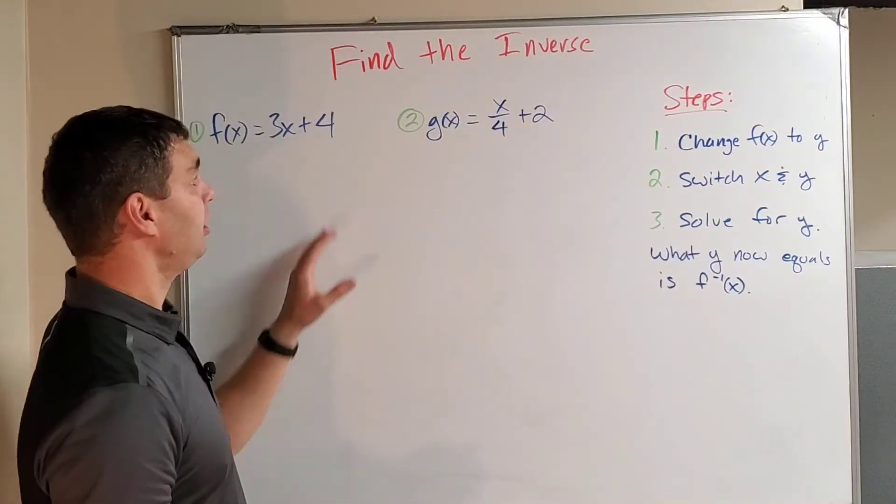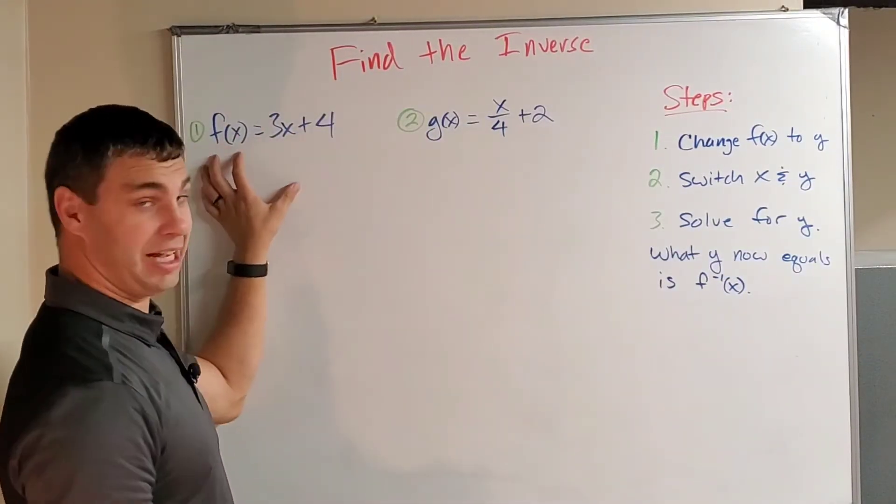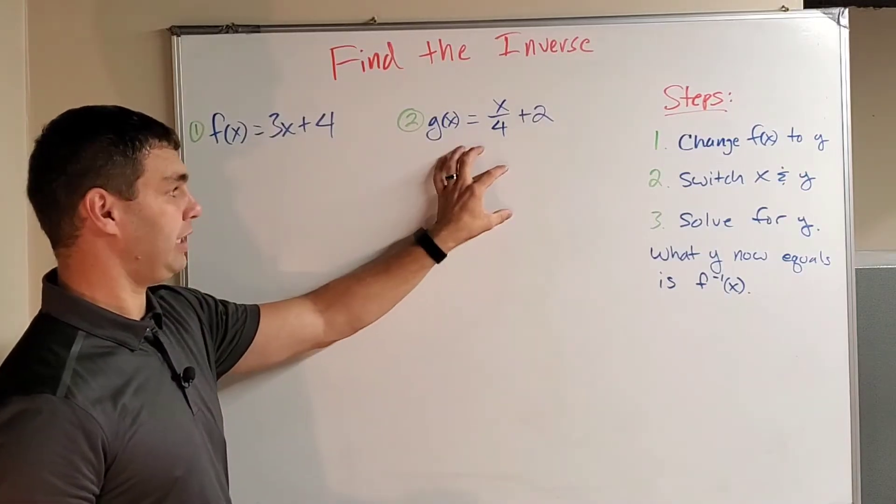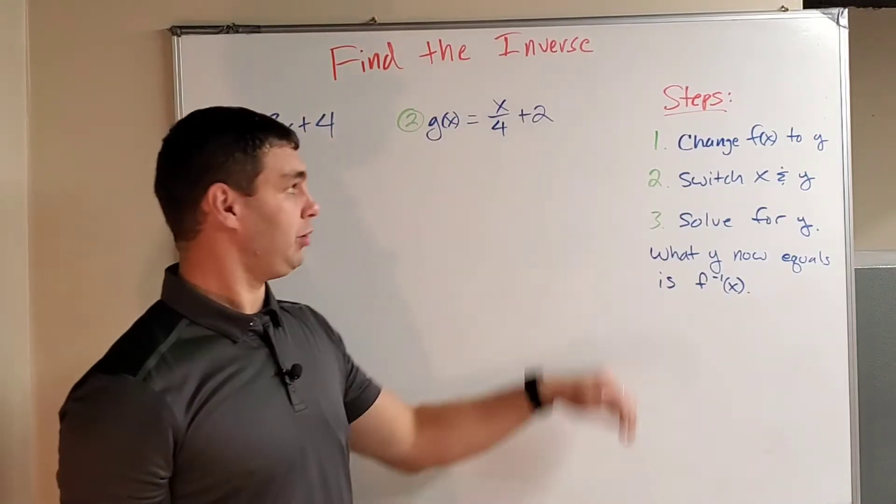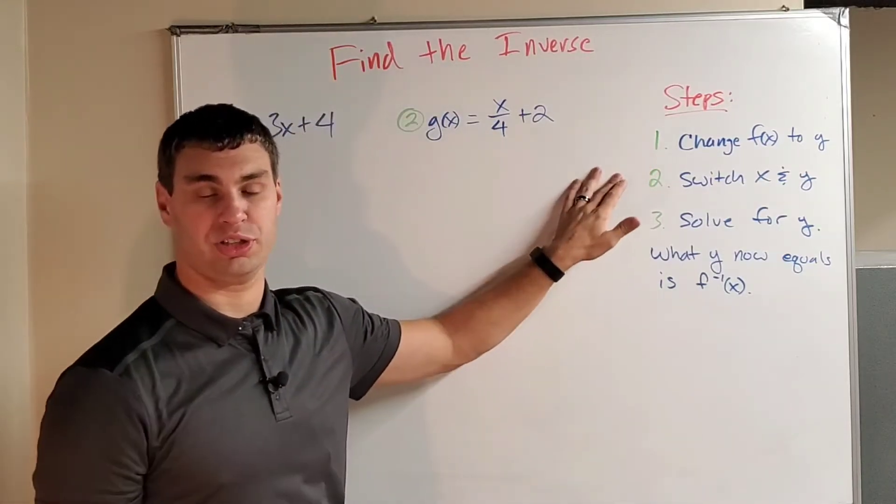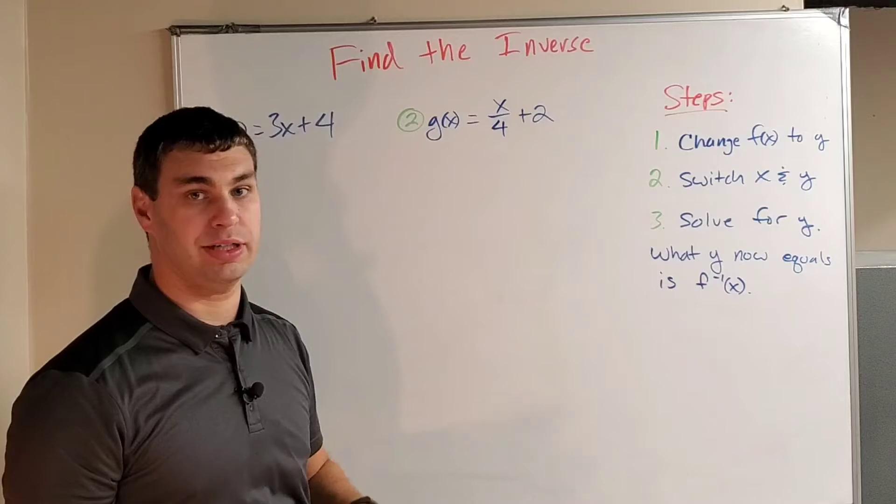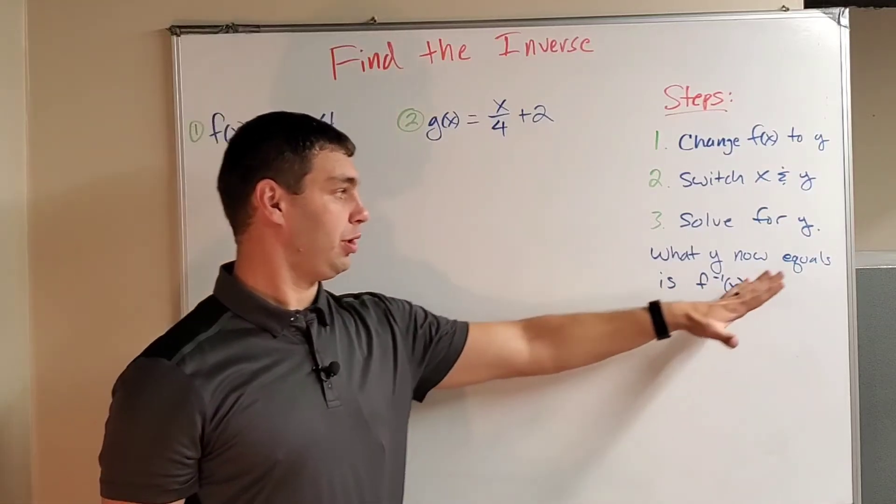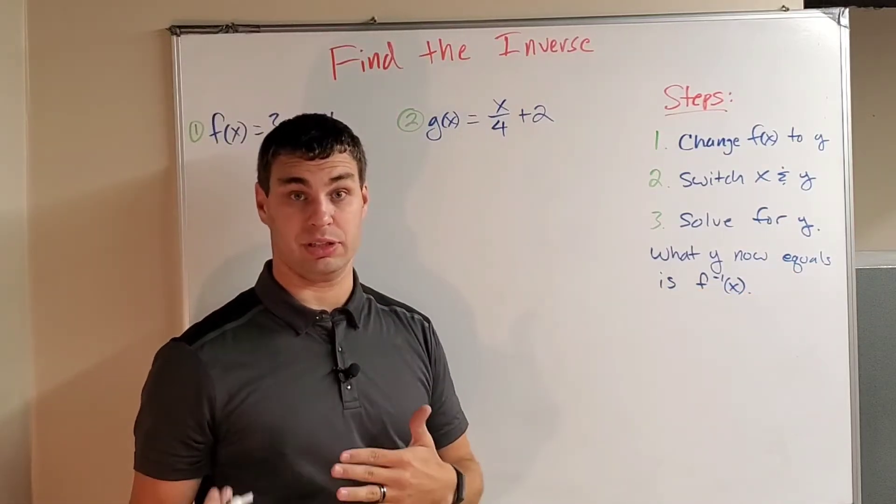So in this problem, we need to find the inverse of both f of x for my first problem and g of x for my second problem. Just a quick reminder, we have some steps when we find the inverse. We're going to first change our f of x to be y. We're going to switch our x and y. Then lastly, we're going to solve for y. And what that equals is going to be my inverse function.